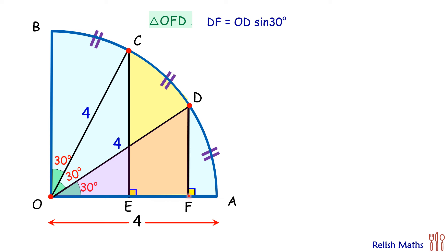DF will be OD sin 30. Putting sin 30 as half, DF is 2 cm. Similarly OF will be OD cos 30 degrees, which equals 2 root 3.